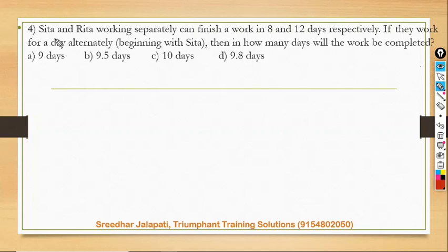Hi learners, this is question number four from time and work, and this is based on alternate days working concept. Given that Sita can finish it in 8 days, Rita in 12 days, and they are working on alternate days beginning with Sita. Sita one day each, so first day Sita works, second day Rita works, third day Sita, fourth day Rita, and so on. So for every two days the cycle repeats.